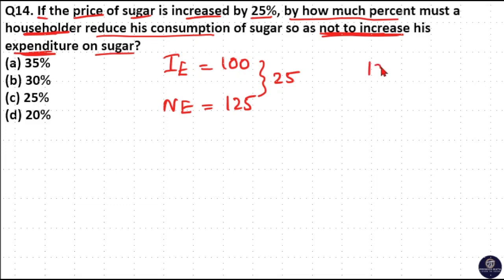Initially he spent 100 rupees for sugar. Finally the current price is 125 but he doesn't want to spend 125 rupees. He only wants to spend 100 rupees.